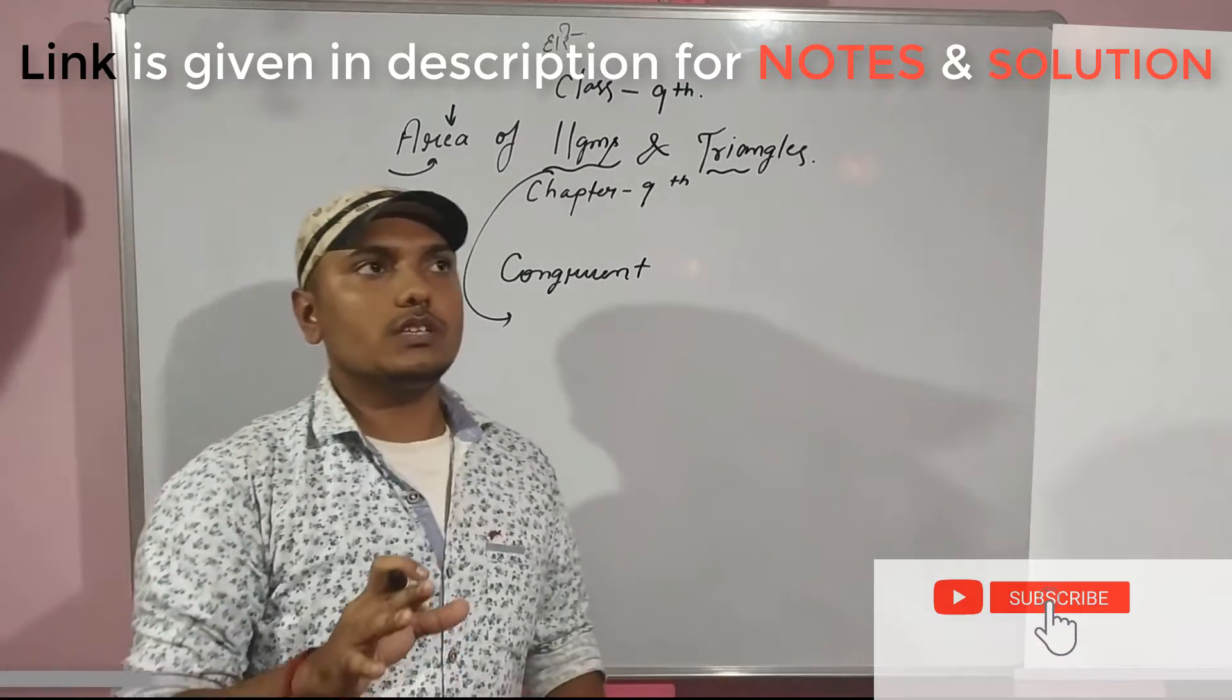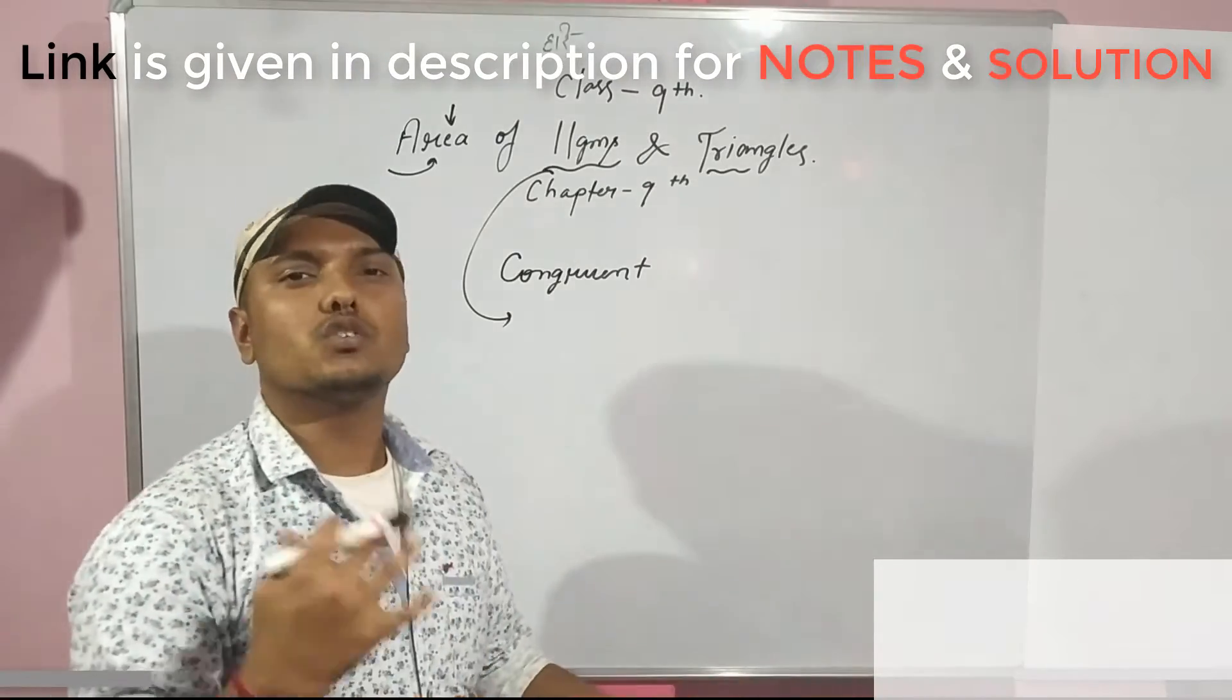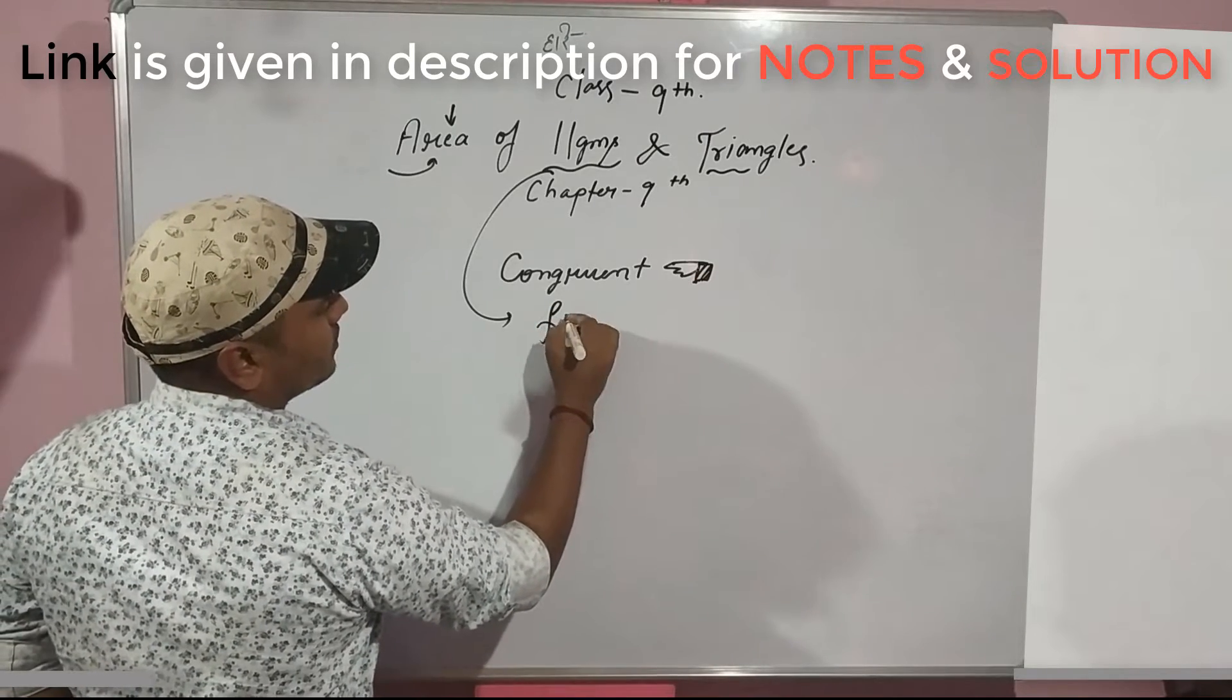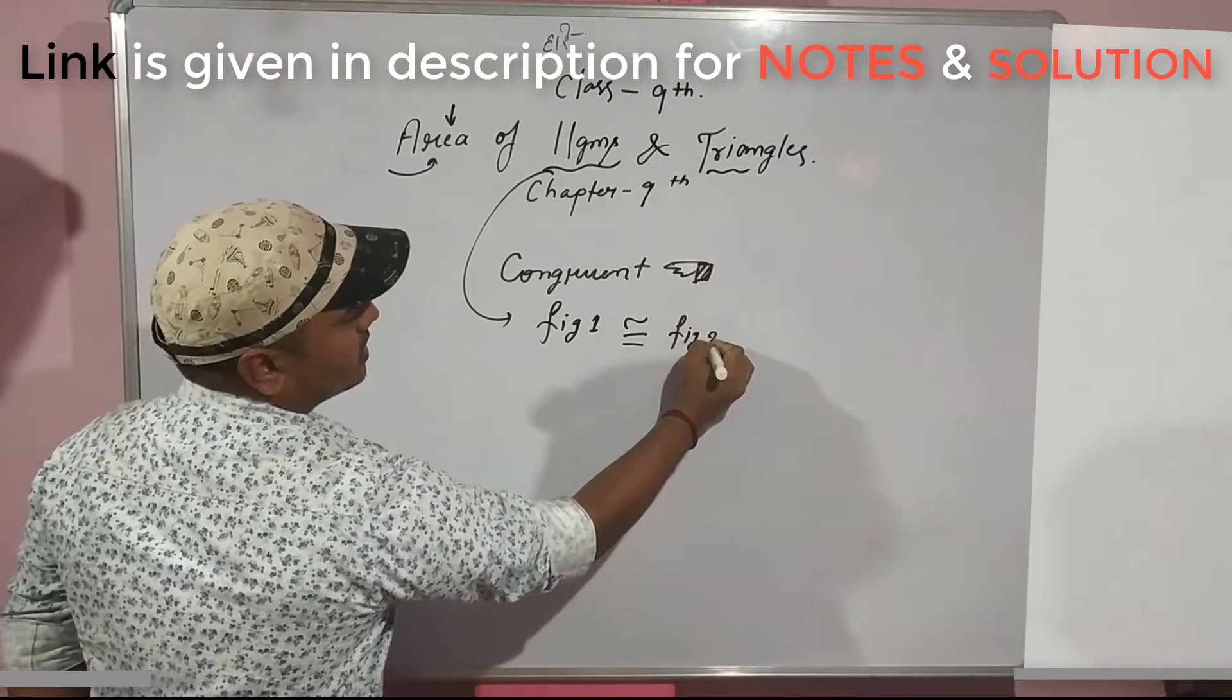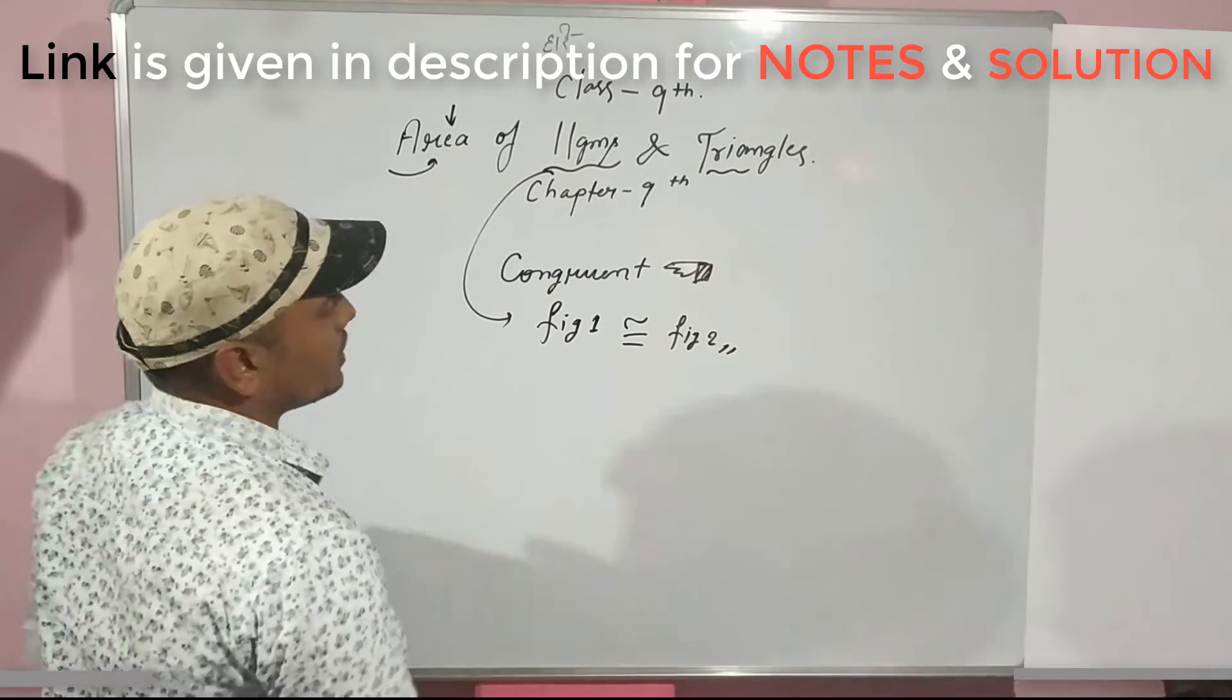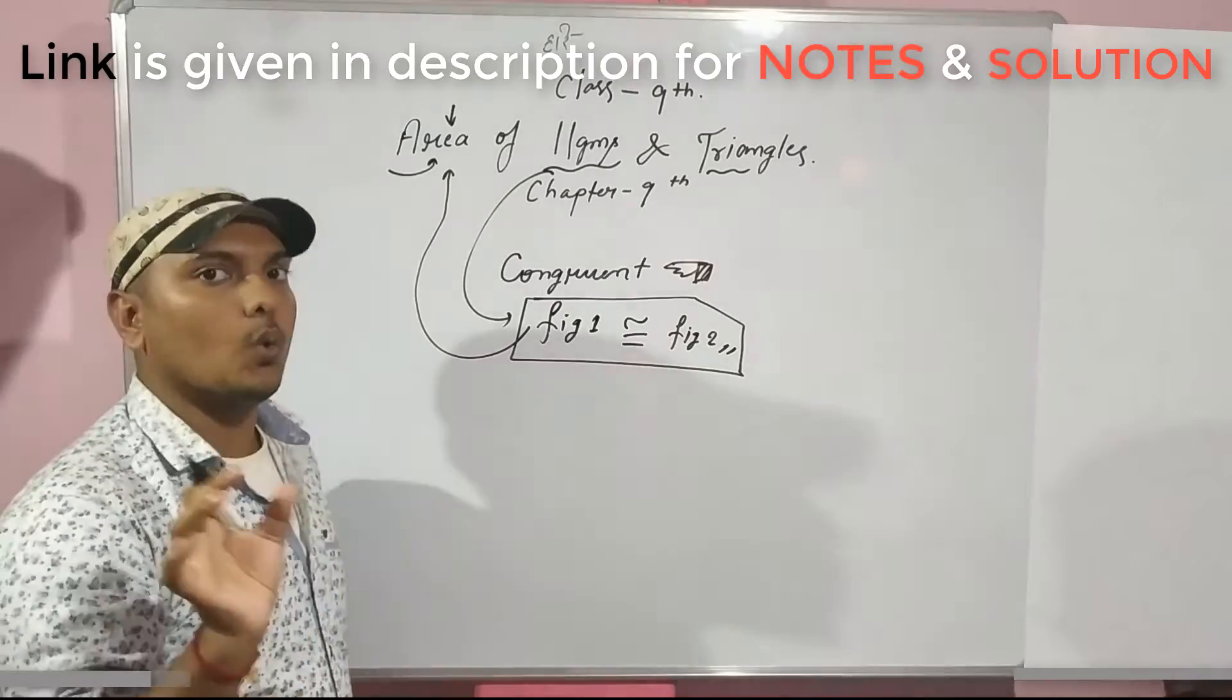You have two figures, and using some criteria or theorem, they are congruent. If two figures are congruent, then they must have equal areas.